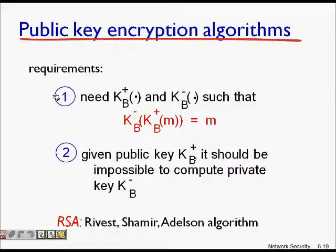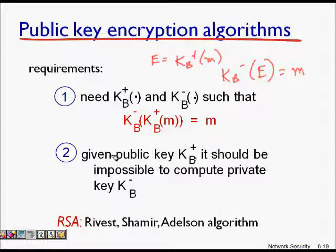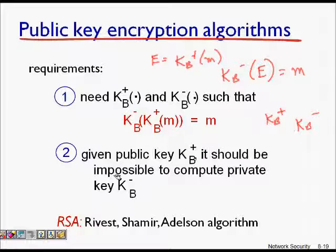Some of the properties or requirements that public key encryption algorithms have: when you encrypt with the public key, the encrypted message can be decrypted using the private key to recover the original message. Also, given the public key, you cannot find the private key. We will now look at the RSA algorithm, developed by Rivest, Shamir, and Adleman.